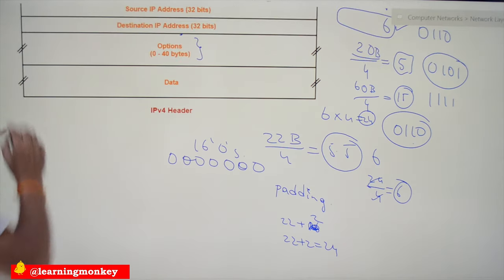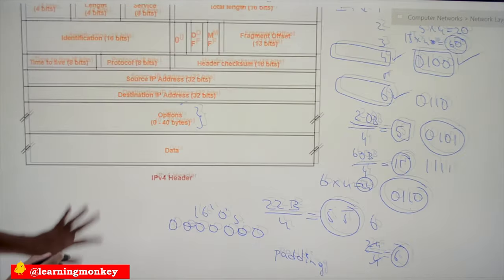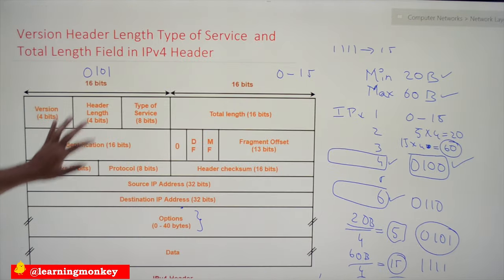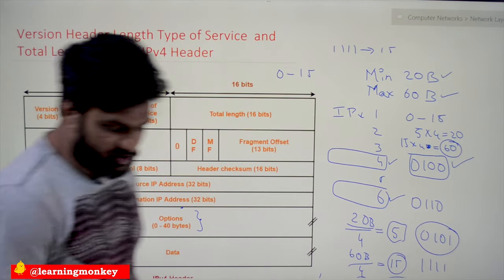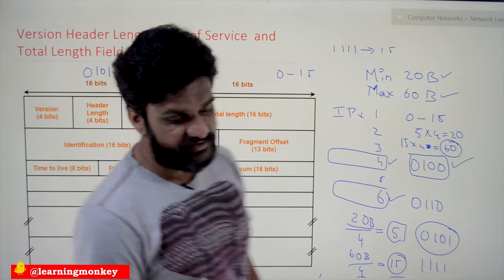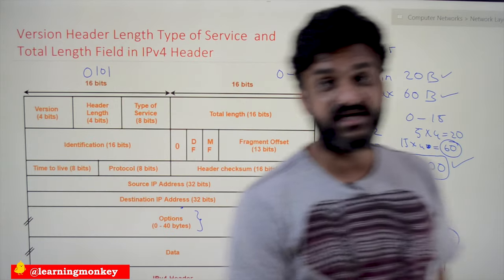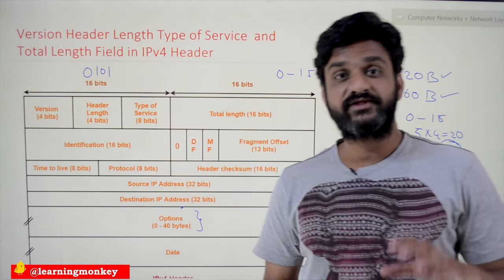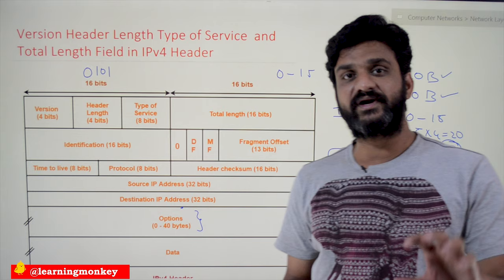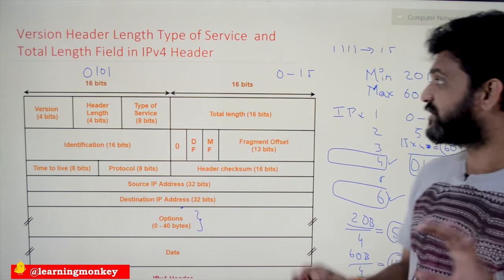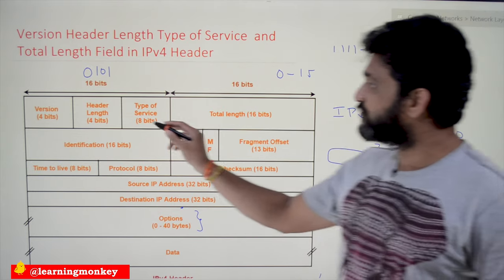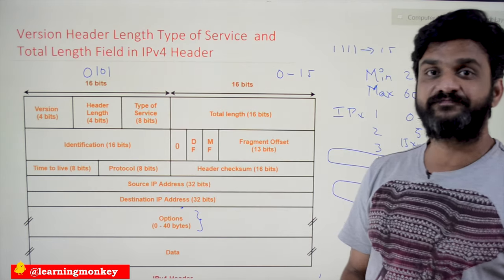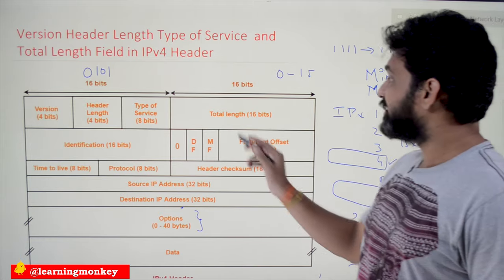The next field is Type of Service. We will understand the Type of Service in detail in later classes when the context arises. For now, just remember that it occupies 8 bits.